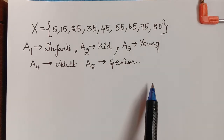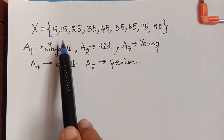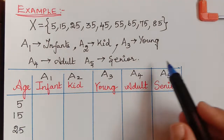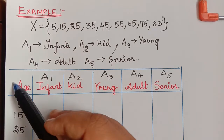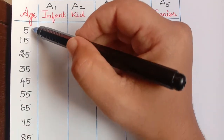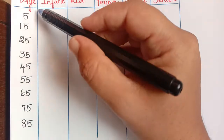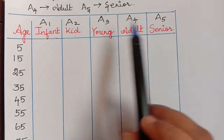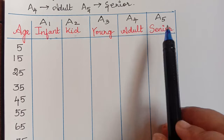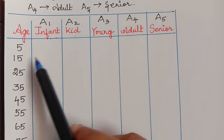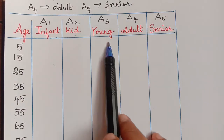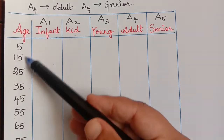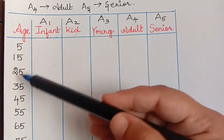We represent this in the form of a tabular column where we have the ages 5, 15, 25 through 85, and the fuzzy sets A1, A2, A3, A4, and A5. We will now assign membership values that represent the degree of relationship between each fuzzy set and each age.